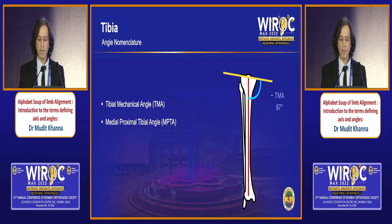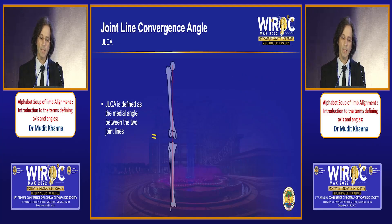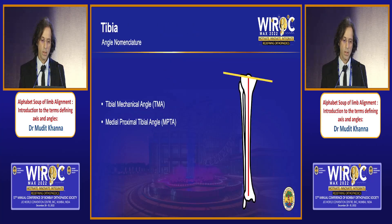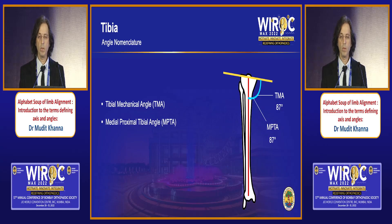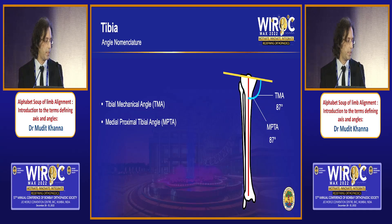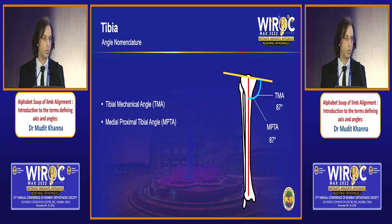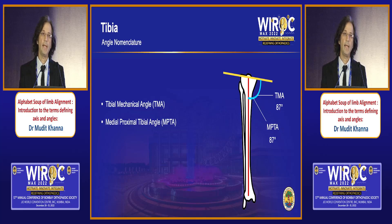The two angles measured on the tibia are the Tibial Mechanical Angle (TMA) — similar to the FMA — which is essentially the angle between the joint line of the tibia and the anatomical or mechanical axis of the tibia. Some studies use MPTA (Medial Proximal Tibial Angle) rather than TMA, but for the tibia both are measured medially so they are essentially the same. On the femoral side, FMA and LDFA are two different terms describing two different angles.